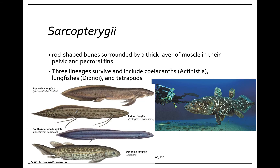The other group of bony fishes is the Sarcopterygii — and this is where we are. You are a lobe-finned fish. Inside these fins they actually have bones surrounded by muscles, creating a thicker, fleshy structure. You can see these fins look quite different from rays — they look fleshy. There are three lineages: the Actinistia, which includes the coelacanths.